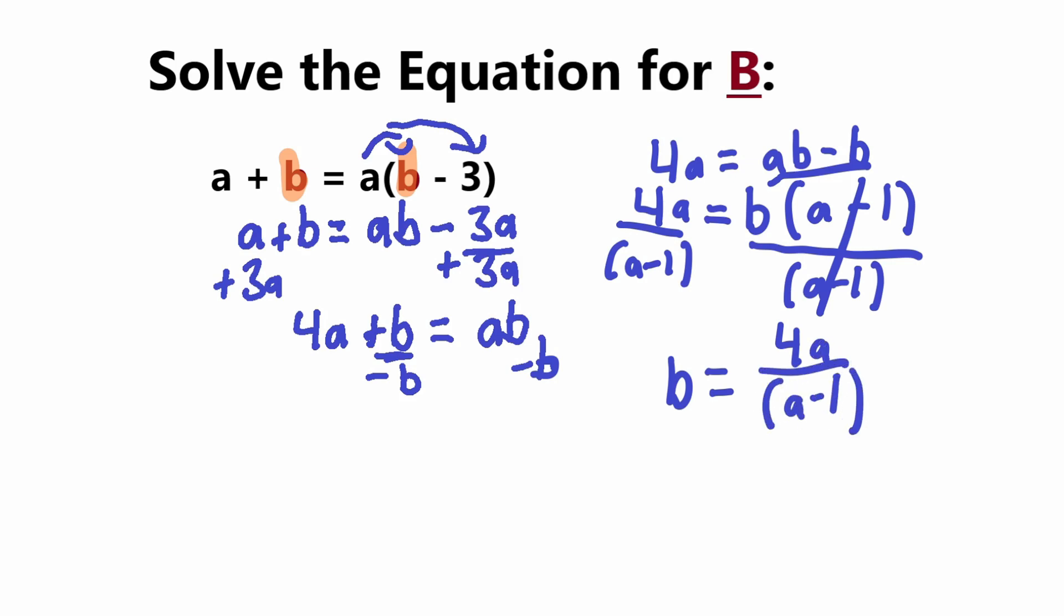So now we'll have b is equal to 4a divided by a minus one. And that is our final answer. So we have solved the equation for b, and this is how to rewrite an equation for a specific variable.